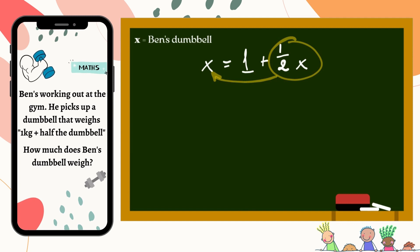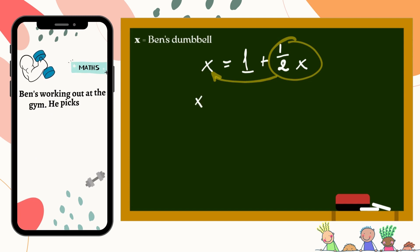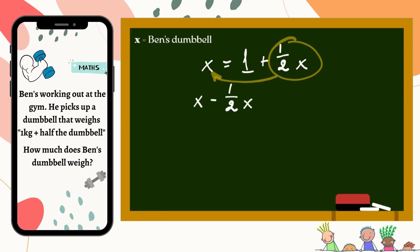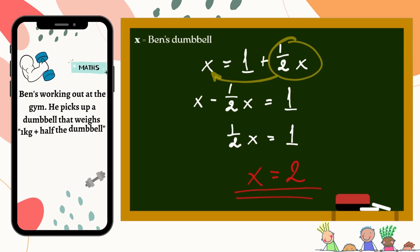The new equation now reads x minus half of x equals 1. x minus half of x is simply one half of x. Multiply both sides of the equation by 2 to get rid of the coefficient, and we get x equals 2. So Ben's dumbbell weighs 2kg.